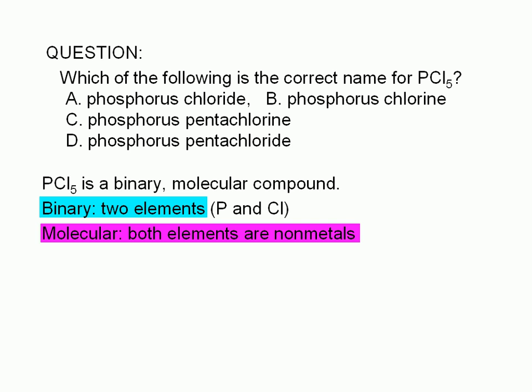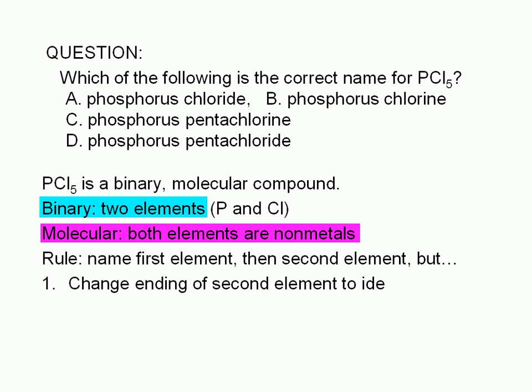The rule of naming binary molecular compounds is this: Name the first element, then the second element, but change the ending of the second element to -ide. This means that choices B and C are wrong.